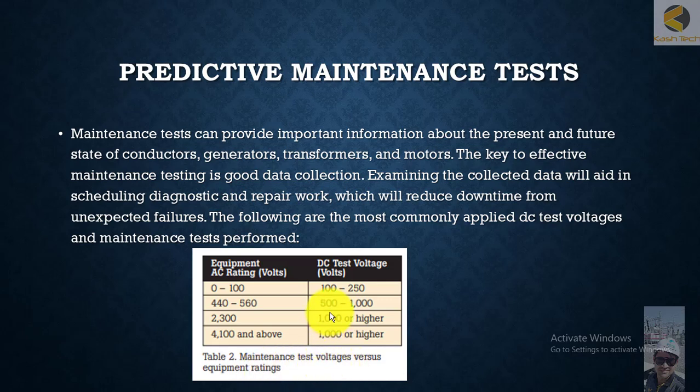Maintenance testing is done to check the healthiness and quality of installation. The key for maintenance testing is to keep the record of each periodic cycle. By observing the pattern, you can forecast when the expected failure of insulation or failure of equipment will occur, and you can then do repair or replacement as needed.